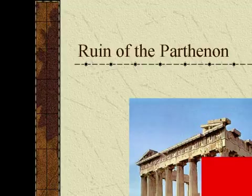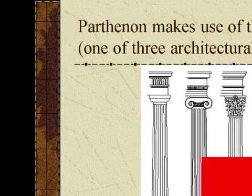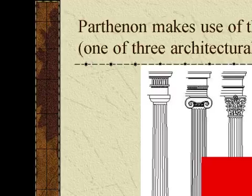The building far over there is the Acropolis. This is the ruin of the Parthenon. The Parthenon makes use of the Doric Order, one of three architectural designs. There are three orders: Doric, Ionic, and Corinthian.